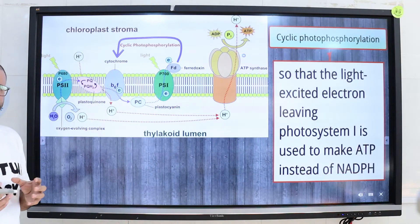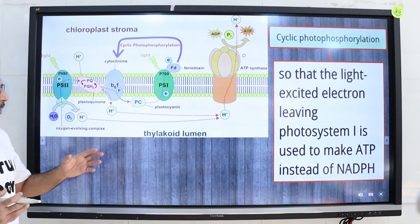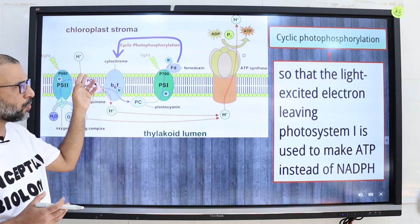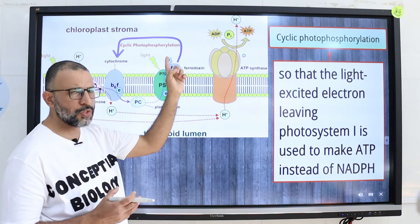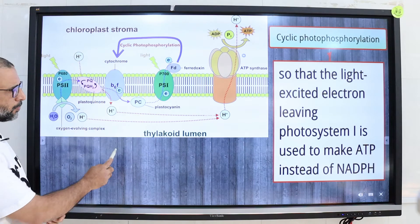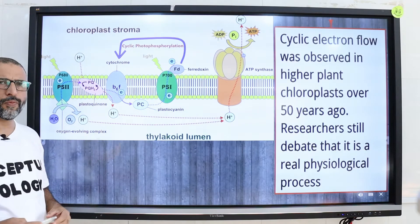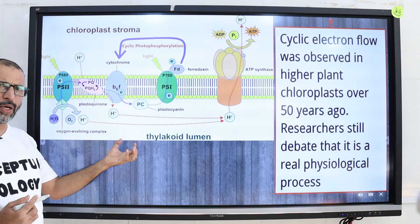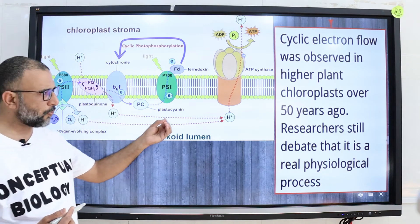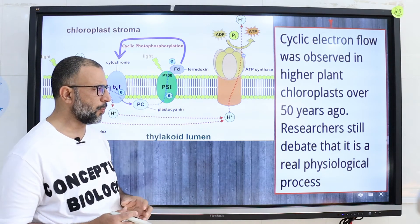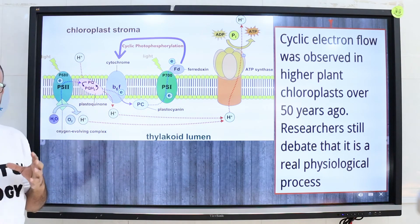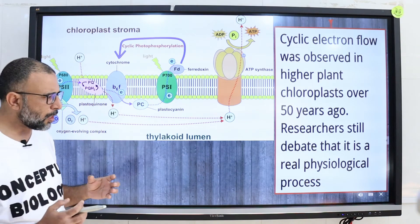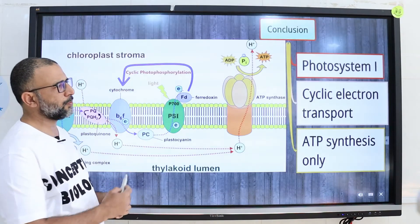The light-excited electron leaving photosystem 1 is used to make ATP instead of NADPH. Cyclic electron flow was observed in higher plant chloroplasts over 50 years ago, and researchers still debate whether it is a real physiological process.